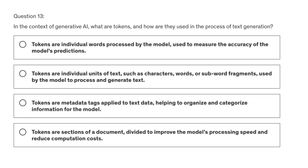We have four options. Option A: tokens are individual words processed by the model, used to measure the accuracy of the model's predictions. Option B: tokens are individual units of text such as characters, words, or sub-word fragments used by the model to process and generate text. Option C: tokens are metadata tags applied to text data, helping to organize and categorize information for the model. Option D: tokens are sections of a document divided to improve the model's processing speed and reduce computation costs.